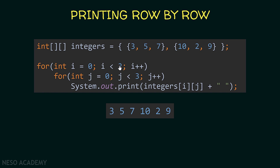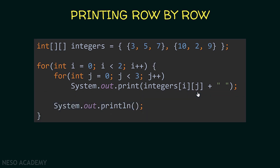As a small summary: when you want to print the array row by row you will have two loops — the outer loop iterates over the rows and the inner loop iterates over the columns. Each time we print integers[i][j], where i is the index of the row and j is the index of the column. Now let's make this a little bit better — after we finish printing each row I'm printing a new line, so after we print three, five, seven we get a new line, and then we print ten, two, and nine. Now it's more obvious that we are printing row by row.